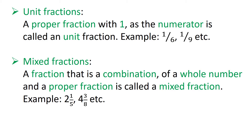Next are unit fractions and mixed fractions. What is a unit fraction? A proper fraction with one as the numerator is called a unit fraction — where the numerator is always less than the denominator. Examples: 1 upon 6, 1 upon 9, etc. A mixed fraction is a fraction that is a combination of a whole number and a proper fraction. Example: 2 and 1 upon 5, 4 and 3 upon 8, etc. In 2 and 1 upon 5, 2 is the whole number and 1 upon 5 is the proper fraction.